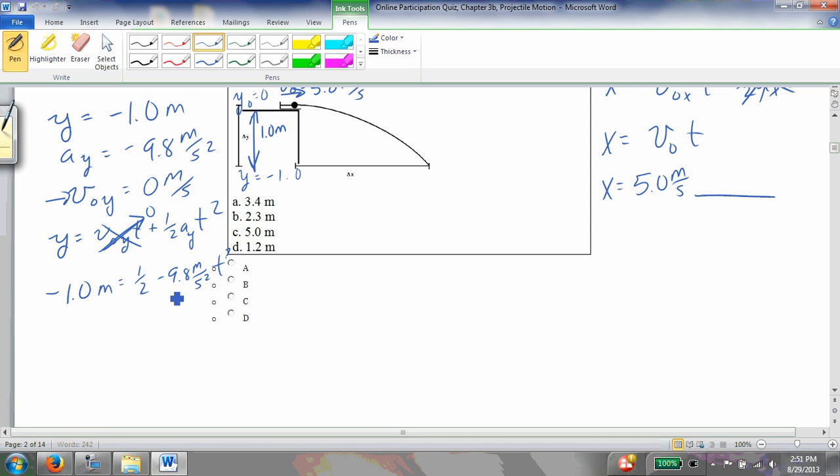I divide both sides by one-half of negative 9.8, which is negative 4.9. So that gets rid of this. And I'll have to have t squared equals, take the square root of t squared, of 1 over 4.9. That's meters over meters per second squared. And 1 over 4.9, square root of that is 0.45, 0.45 seconds. So that's my time.